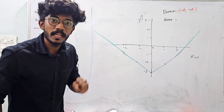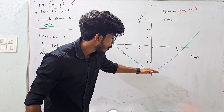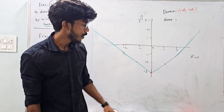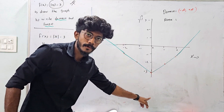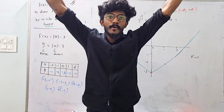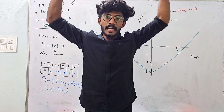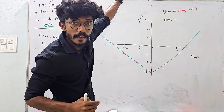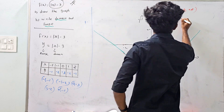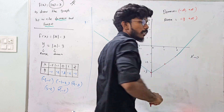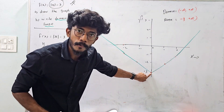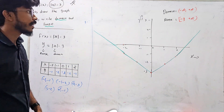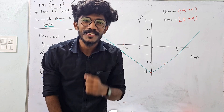y is the corresponding value. The minimum y value is minus 3. So the range is from minus 3 to infinity. Infinity is an open bracket and minus 3 is included, so it is a square bracket. Range is [-3, ∞). Is that clear?